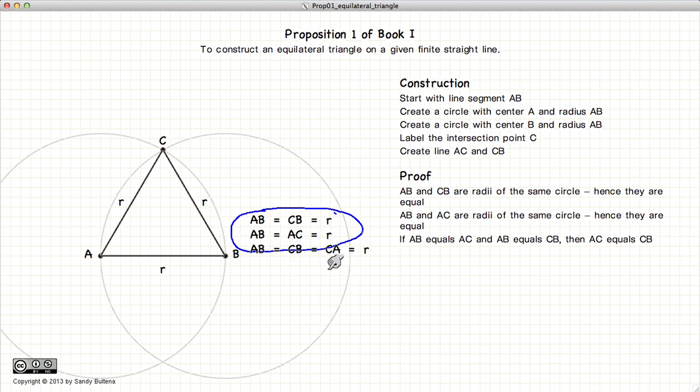So that means that AB equals CB equals CA equals r, or that all the sides of our triangle are equal in length, which by definition is an equilateral triangle.